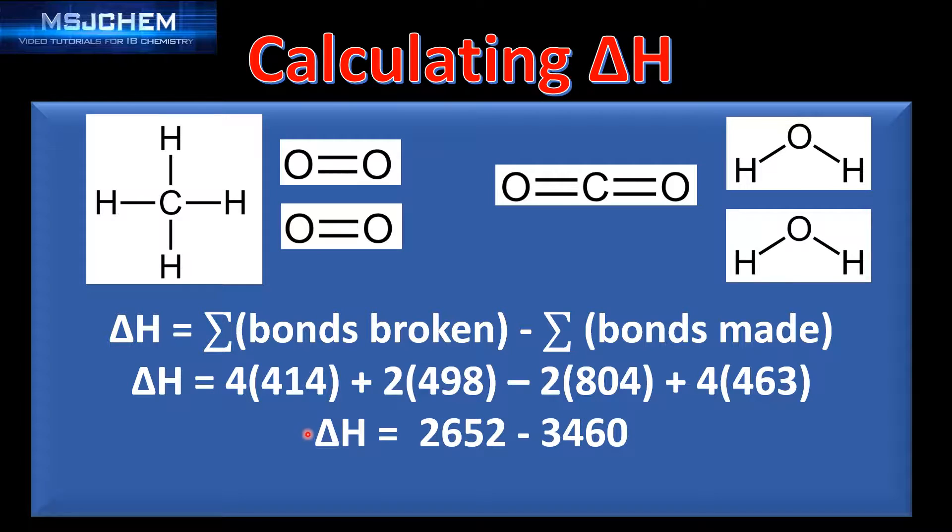So when we do the calculation the sum of the bonds broken in the reactants is 2652 kilojoules and the sum of the bonds made in the products is 3460 kilojoules so that gives us an enthalpy change of negative 808 kilojoules per mole.